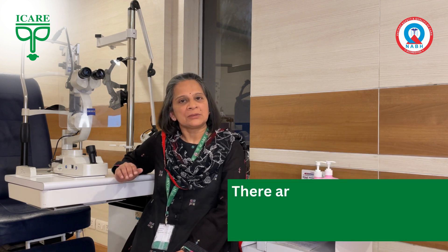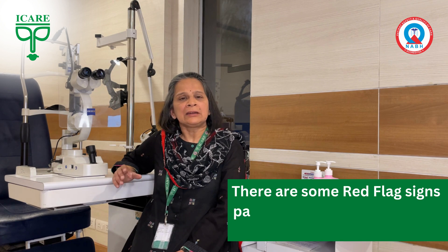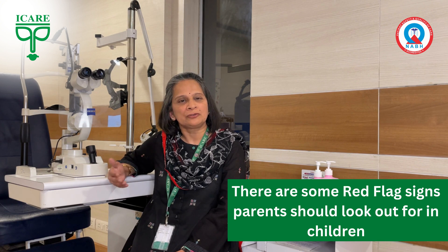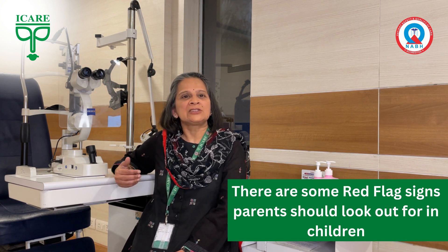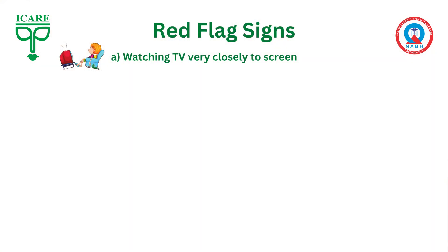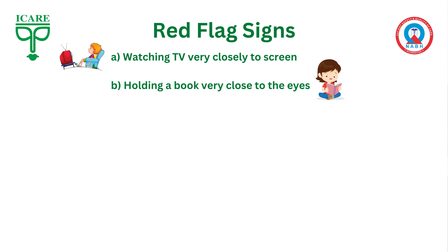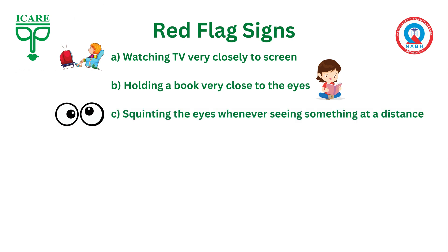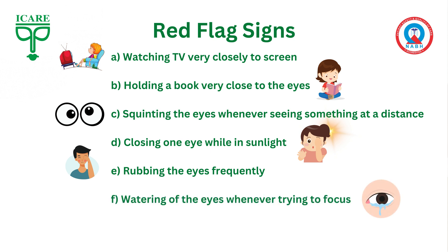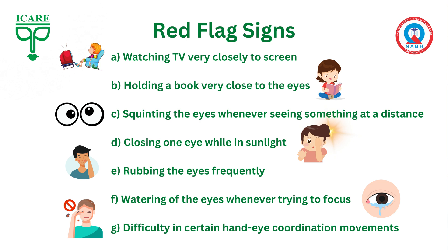I would like to emphasize that there are certain pointers or red flag signs which parents or caregivers can look out for in children, to tell them if their child is probably having a problem with vision. This could be going very close to the television to see the screen, holding a book very close to the eyes, squinting the eyes whenever trying to see something at a distance, closing one eye when the child goes outdoors in sunlight, rubbing the eyes frequently, watering of the eyes whenever the child is trying to focus on something, or any difficulty in hand-eye coordination movements.